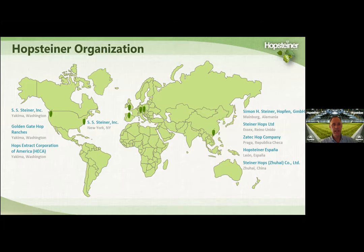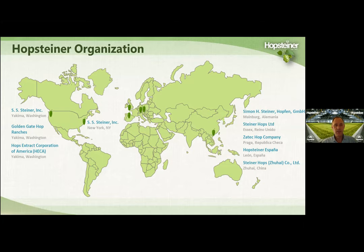Hofsteiner is an international hop company with two major manufacturing facilities: one in Yakima, Washington and the other in Meinberg, Germany. The United States last year grew about 40% of the world's hops and Germany grew about 37%, so 75% of the world's hops come from these two major growing countries. Hofsteiner also has facilities in the UK, Czech growing regions, Spain, China, and affiliates in Australia, New Zealand, South Africa, Argentina, and other areas. If there's an international variety you're interested in, we can obtain it for you.